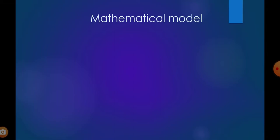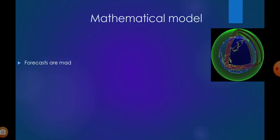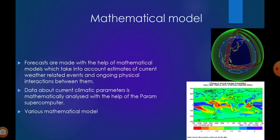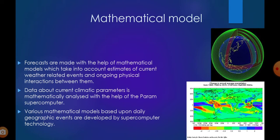Mathematical model. Forecasts are made with the help of mathematical models which take into account estimates of current weather-related events and the ongoing physical interactions between them. Data about current climatic parameters is mathematically analyzed with the help of PARAM supercomputers. Various mathematical models based upon daily geographic events are developed using supercomputer technology for predicting weather and climate.